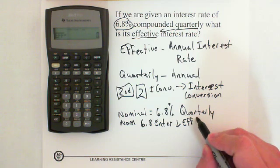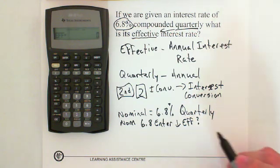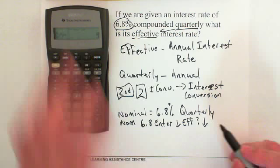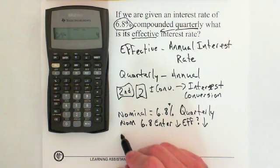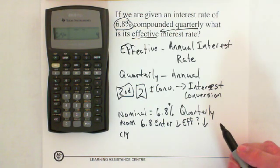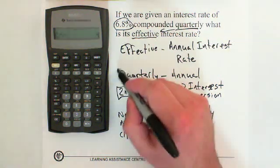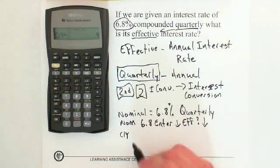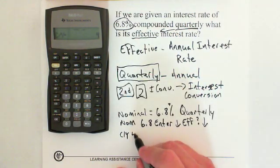EFF is what we're trying to find, so I'm just going to put a little question mark beside it. Then we push the down arrow again, which brings us to CY. The CY is just like the normal CY when we go Second IY — CY stands for compounding periods per year, which in this question is quarterly. So we want to set CY to 4.